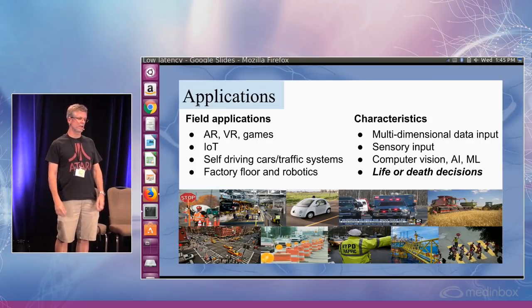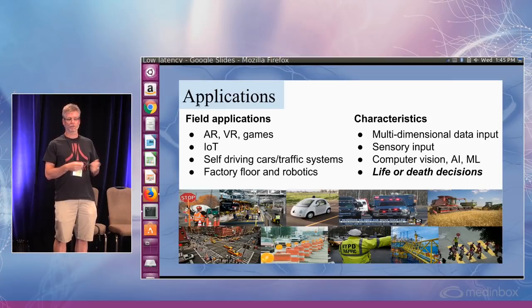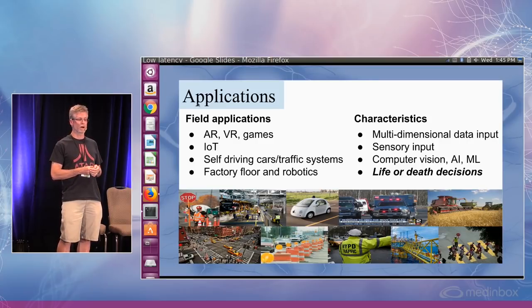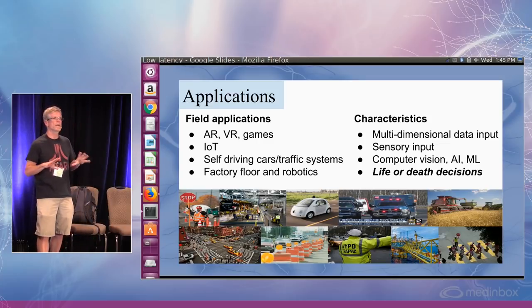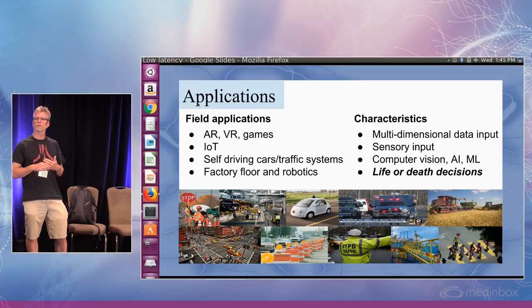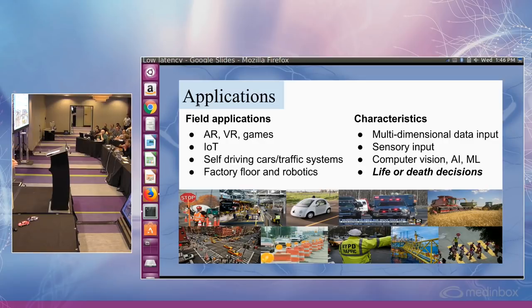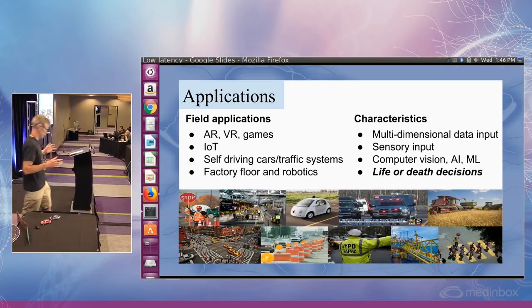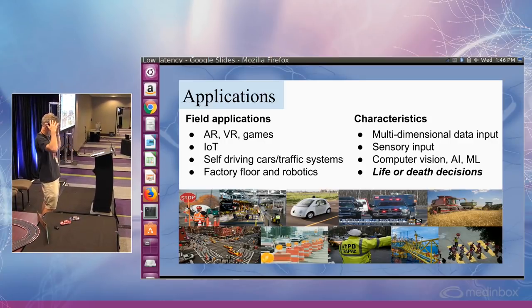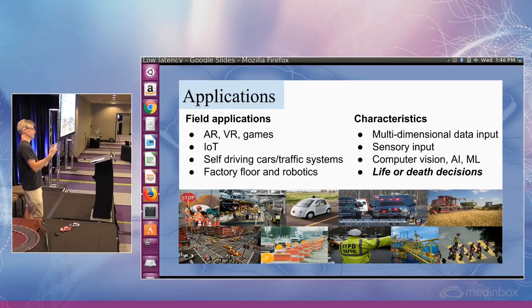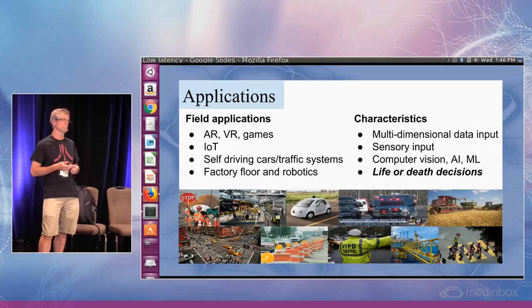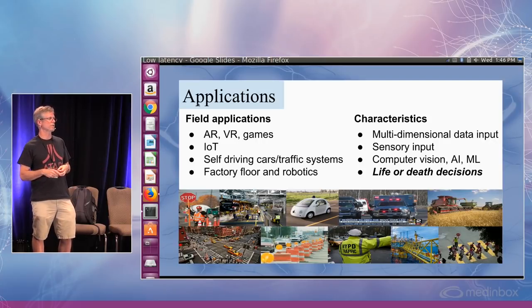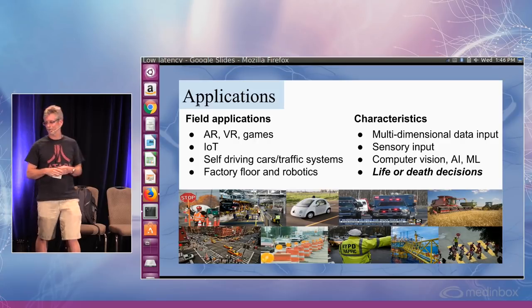What kind of applications are there? Augmented reality, VR, gaming, IoT, self-driving cars, traffic systems, factory floor and robotics. These tend to have common characteristics — multidimensional input, machine learning and AI for very complex systems that require low latency. You're trying to do incredibly complex things, like a human brain does, but quicker. Computer vision, AI, machine learning. At some point these become life or death decisions. We've already seen this with self-driving cars — somebody's life is at risk. Maintaining that latency guarantee becomes quite critical.